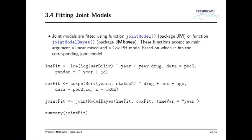To fit the joint model, you first fit the linear mixed model for serum bilirubin, fit the Cox model for time to death, then pass both into the joint model function. In the JM package it's called jointModel(); in JMBayes it's called jointModelBayes() — you just add the 'Bayes' acronym. The basic syntax is simply to pass the fitted mixed model object and the fitted Cox model object into this function.